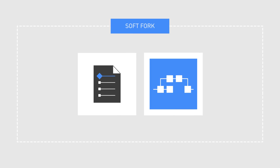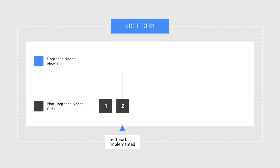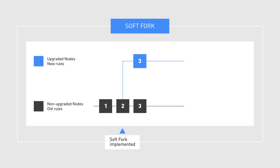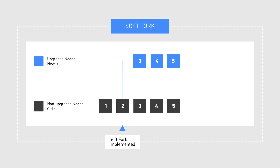A soft fork is a change in a cryptocurrency protocol which is backward compatible. That means that non-updated nodes are still able to process transactions and push new blocks to the blockchain, so long as they don't break the new protocol rules.